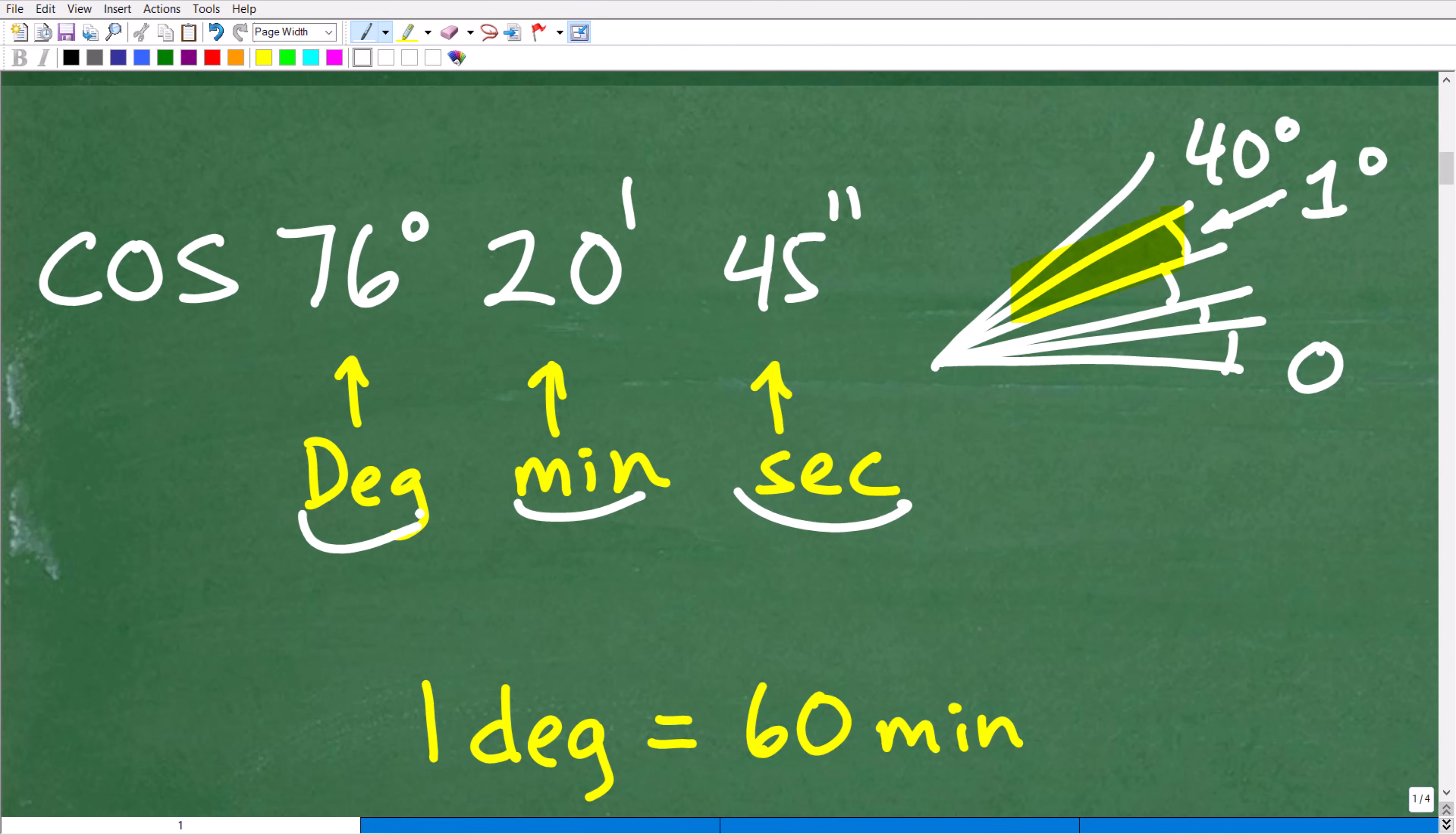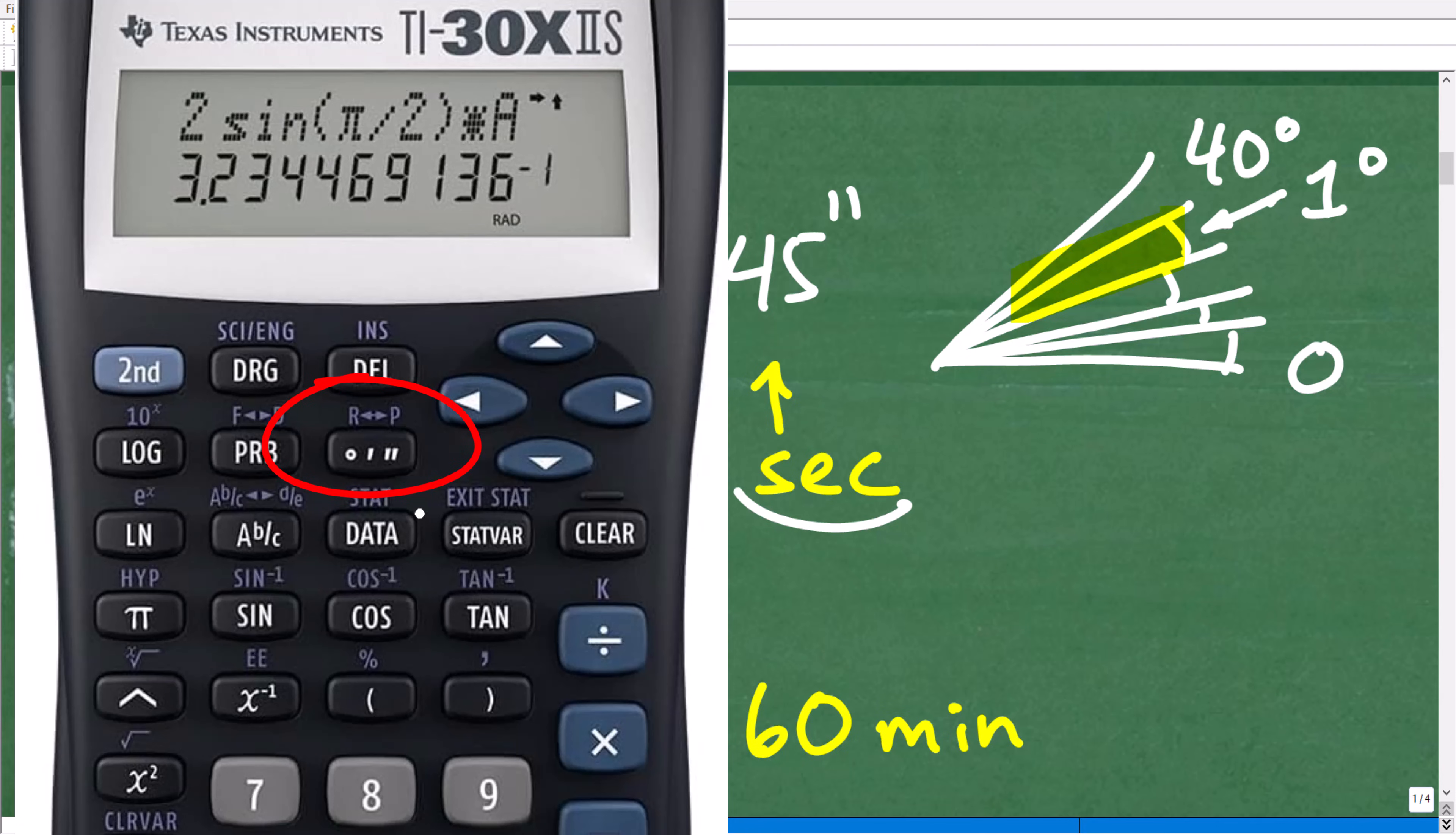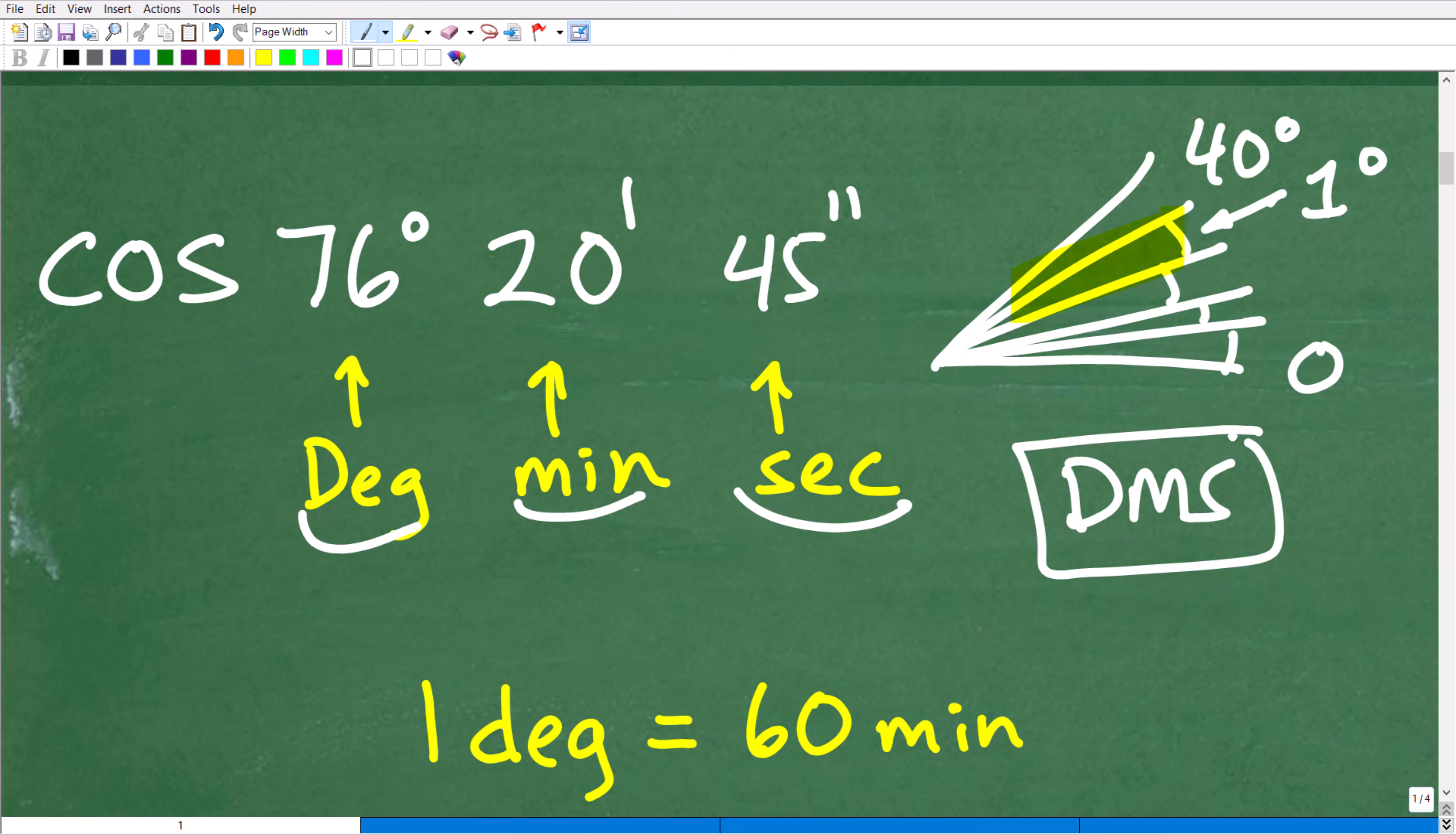So that's basically what we need to know. In your calculator, you can use degree, minutes, and seconds. There is a DMS button, I believe. I definitely know the function exists.